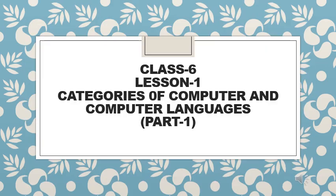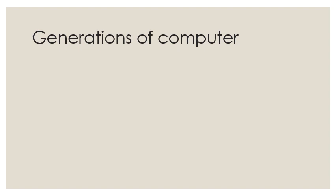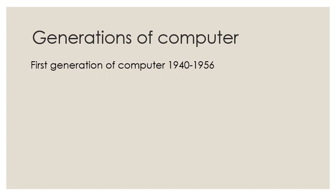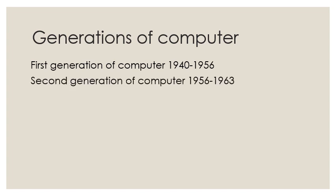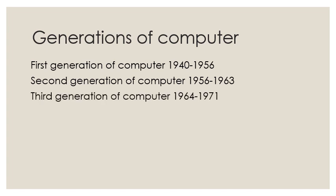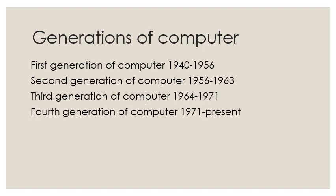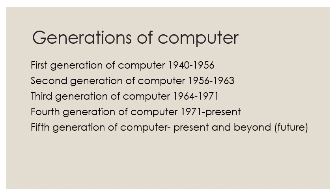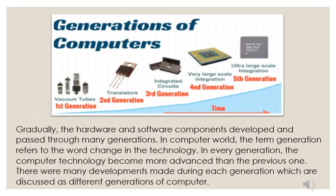Hello students. In this video we will study about different generations of computer. There are five generations of computer. The first generation is from 1940 to 1956, second from 1956 to 1963, third from 1964 to 1971, fourth from 1971 till present, and fifth generation is present and beyond. From the displayed image we can clearly see how technology has changed with respect to time. Gradually, the hardware and software components developed and passed through many generations.